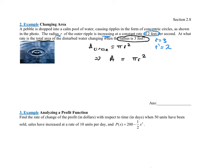We cannot plug in the given information until we find the derivative of both sides first. Taking the derivative with respect to t of both sides: the derivative of A with respect to t is A' or dA/dt. The derivative of πr² — since π is just a number, we drop down the 2 — giving us 2πr to the first power, then multiply by r'.